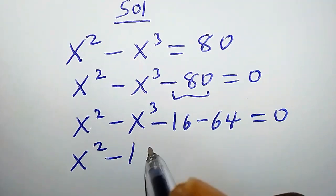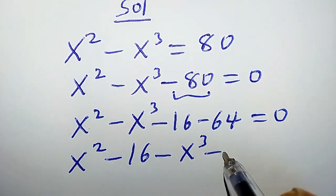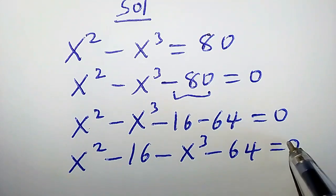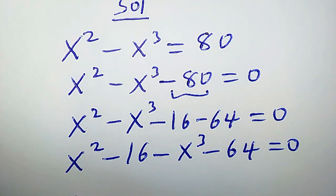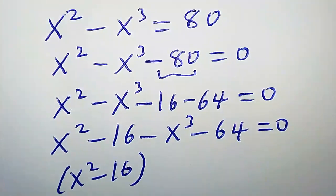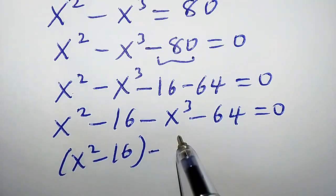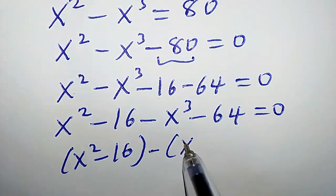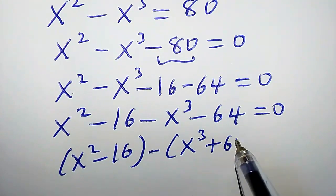Let us rearrange this equation. Doing that, we're going to have x squared minus 16, minus x cubed minus 64, equals zero. We can isolate these two groups, so we have x squared minus 16 in brackets, then we pull out minus one, giving minus times (x cubed plus 64) equals zero.